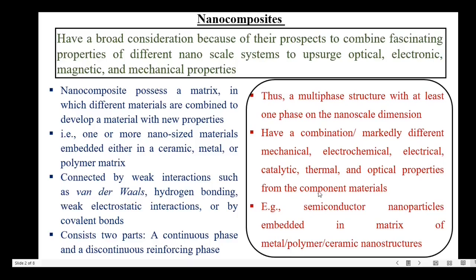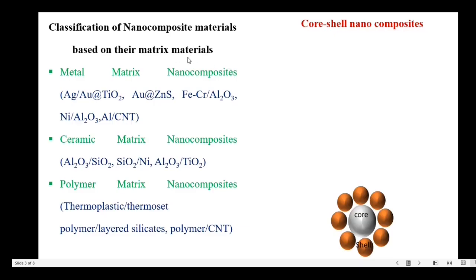An example of nanocomposite materials is semiconductor nanoparticles embedded in a matrix of metal, polymer or ceramic nanostructures. Based on the matrix used, nanocomposites are classified into three types: metal matrix nanocomposites, ceramic matrix nanocomposites, and polymer matrix nanocomposites. Examples for different nanocomposite matrices are given here.